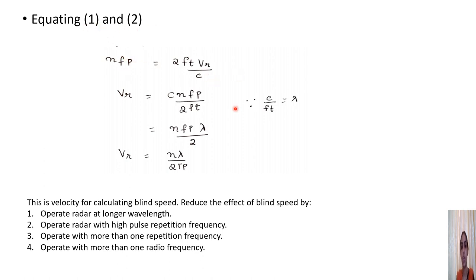Equating both equations — the Doppler frequency from clutter and the general Doppler shift equation — and replacing c/FD with wavelength λ, we get the blind speed velocity VR equals n·λ / (2·TP). Possible methods to reduce the effect of blind speed include operating at a longer wavelength, operating with a very high pulse repetition frequency, and operating with more than one radio frequency. In this section we have seen coherent MTI, non-coherent MTI, the delay line canceller, and blind speed.